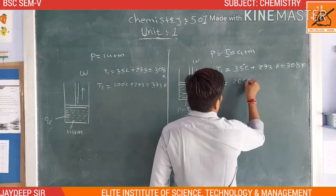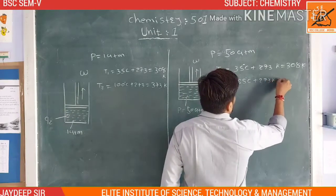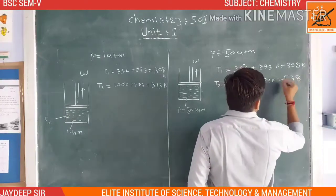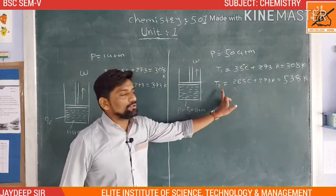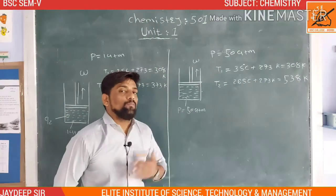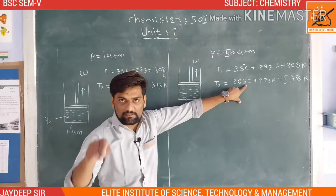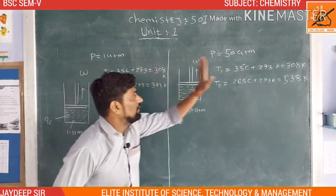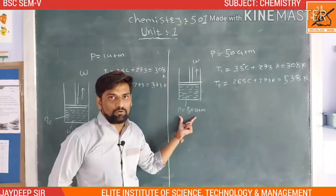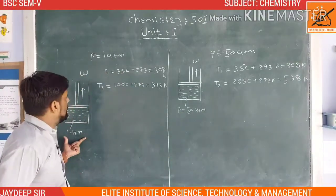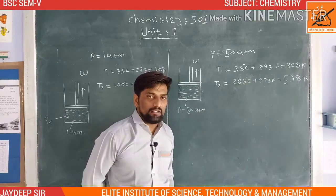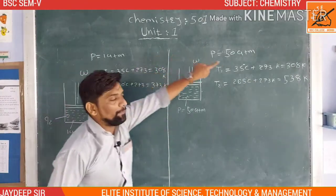In the second situation, the source temperature is 265 degrees Celsius, because at 50 atmospheric pressure the boiling point of water is 265 degrees Celsius. Converting to Kelvin: T2 equals 265 plus 273, which gives 538 Kelvin. So T1 is 308 Kelvin, and T2 for the second case is 538 Kelvin.